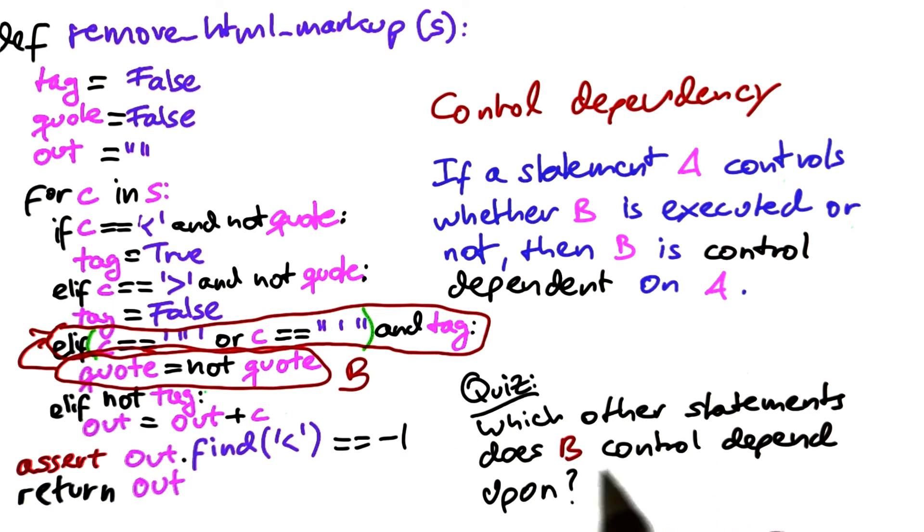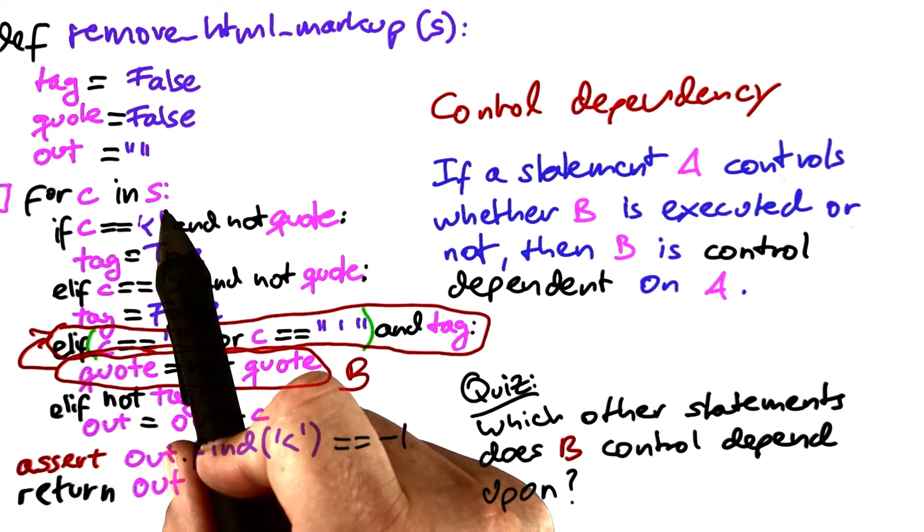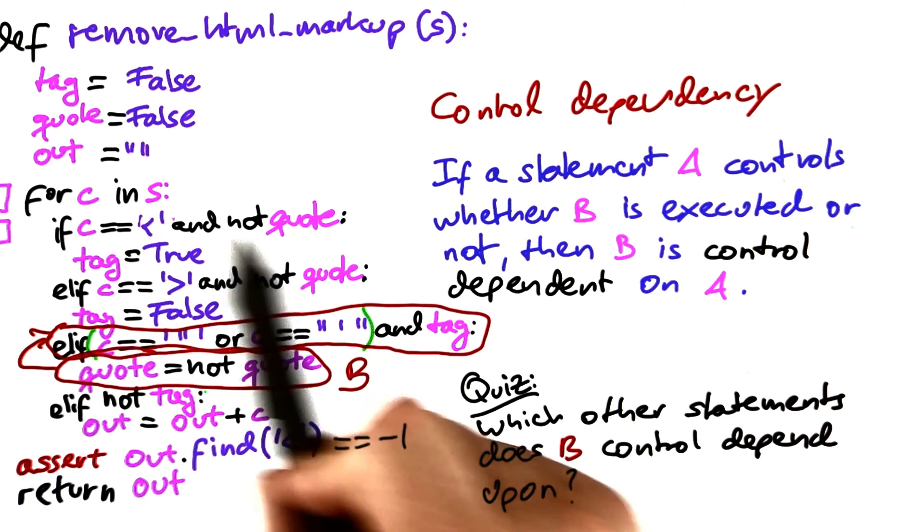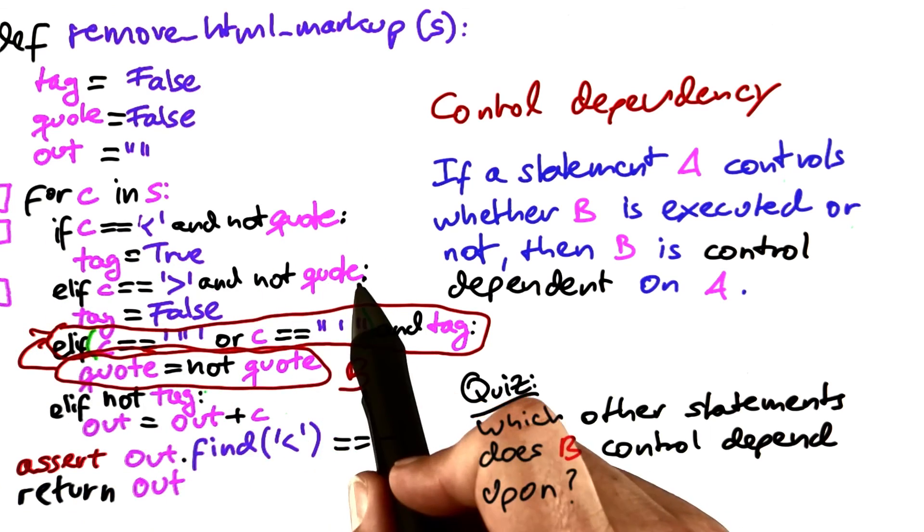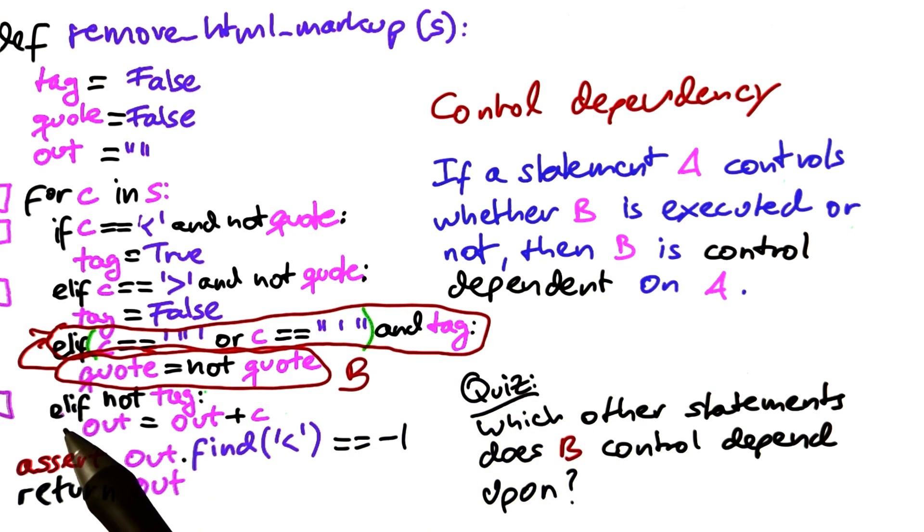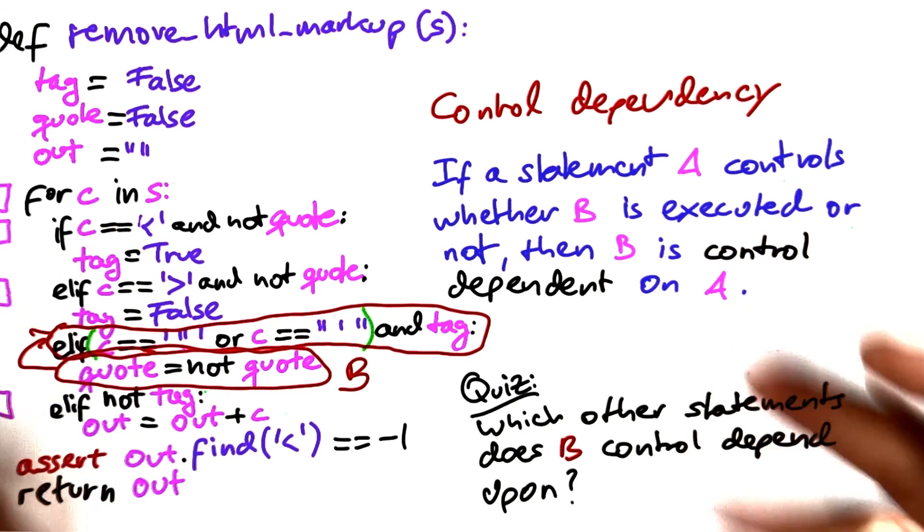Here's a quiz. Which other statement does b control depend upon? Is this for c in s? Is this the first if statement? Is this the first elif statement? Or is this the last elif statement? Check all that apply.